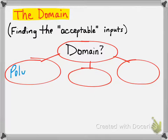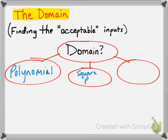Again: polynomial — you should write this down — polynomial, square root, and the third one would be rational.